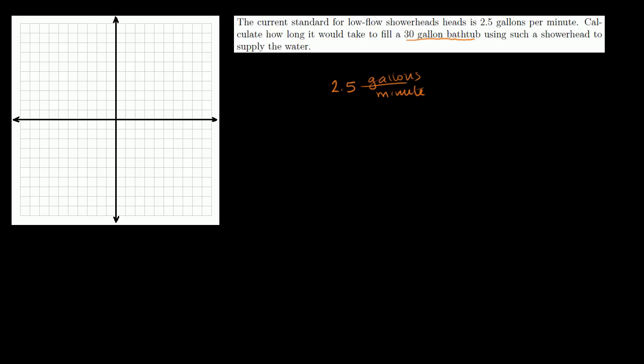So we can set up a direct variation model. It sounds very fancy, but it just says, let's set up a little equation that describes how many gallons we would have filled after a certain number of minutes. Let's say that gallons is equal to the rate at which we fill the gallons, so it's going to be 2.5 gallons per minute times the number of minutes. I'll say m for minutes, g for gallons. We have just set up our direct variation model.